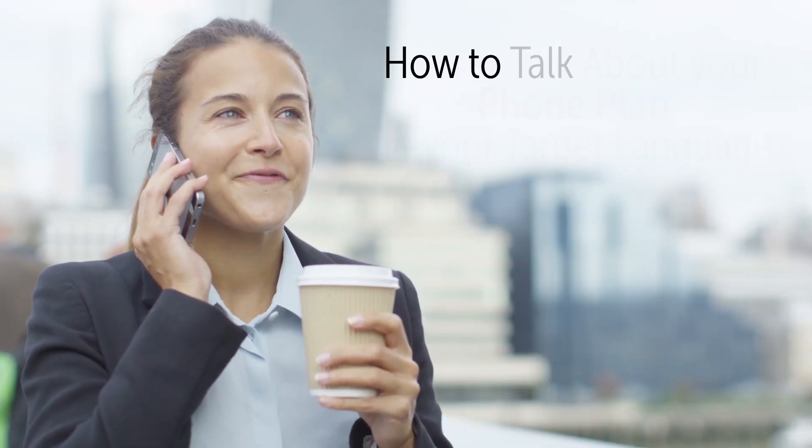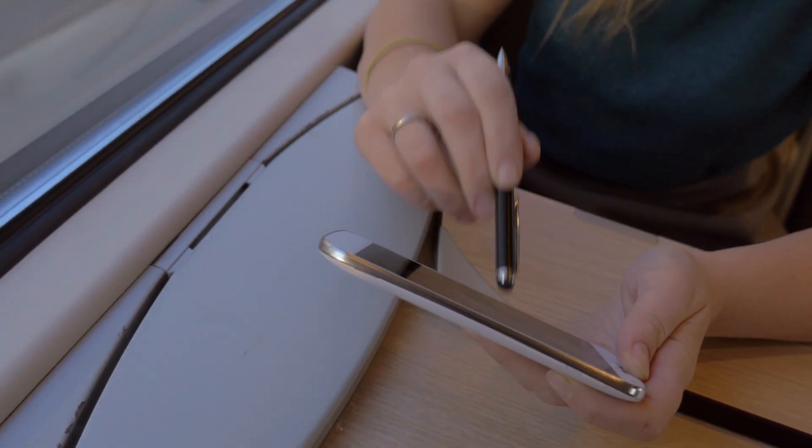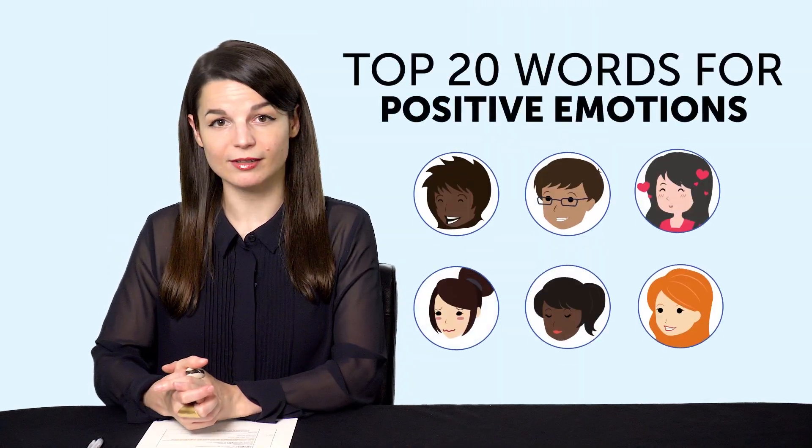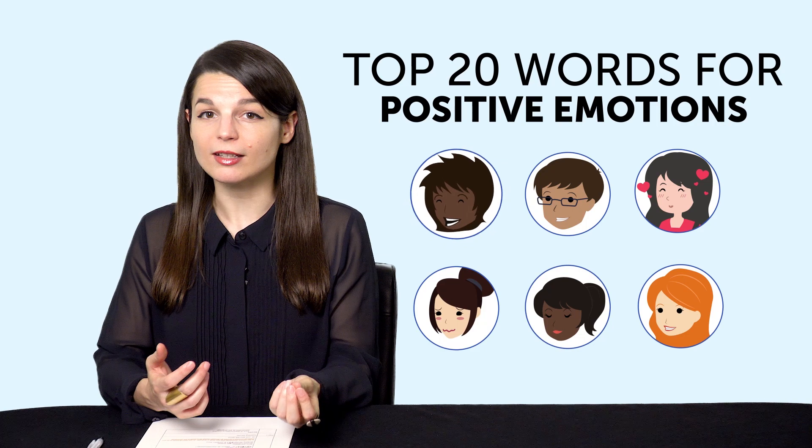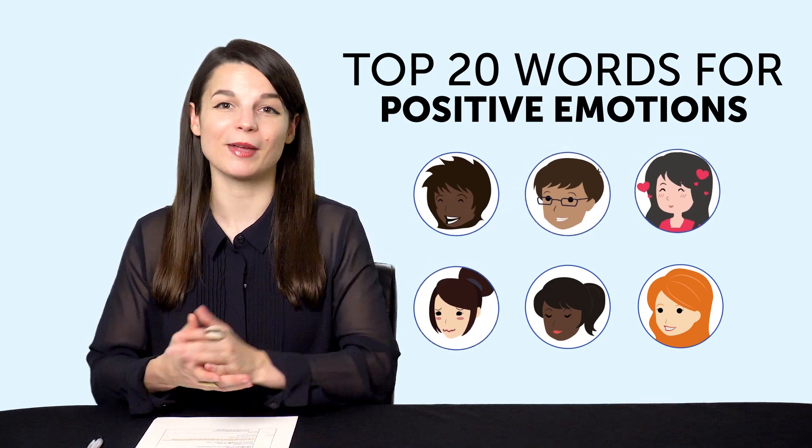Fourth, how to talk about your phone plan in your target language. If you're traveling and need to get a phone, then this one-minute vocab lesson is for you. Fifth, top 20 words for positive emotions. If you want to talk about your feelings, then check out this next lesson. It'll teach you 20 positive emotion words in just a few minutes.